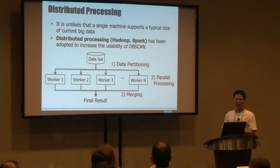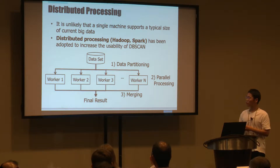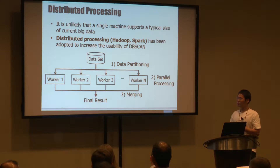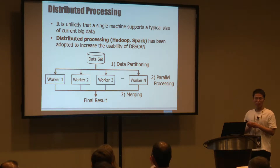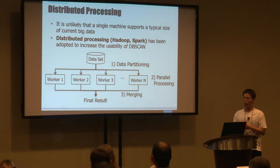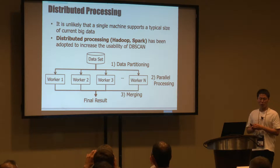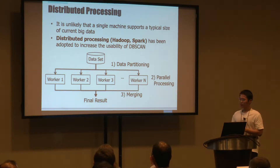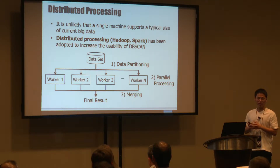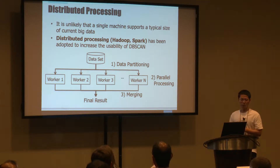However, due to the high computation complexity and limited resources of a single machine, it is unlikely that a single machine can handle typical big data sizes. These days, distributed processing such as Hadoop and Spark has been adopted to increase the usability of DB Scan. The common procedure of parallel DB Scan involves: first, dividing the dataset into multiple workers; second, all workers process each partition; and finally, all results are merged into one final result.